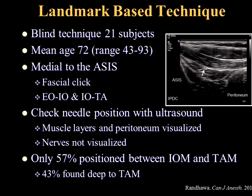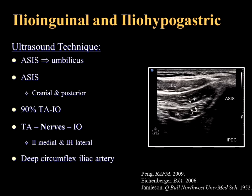If we go far lateral we likely won't cause harm — just into the iliacus muscle — but if we go medial, we could enter the peritoneum. For the ultrasound technique, you find the ASIS, go slightly cephalad and posterior, with the probe in line with the umbilicus and the ASIS. Identify three muscle layers: external oblique, internal oblique, and transverse abdominus. Anatomical studies show that in 90% of individuals the nerves are found between the transverse abdominus and internal oblique. Be careful to also identify the deep circumflex iliac artery.